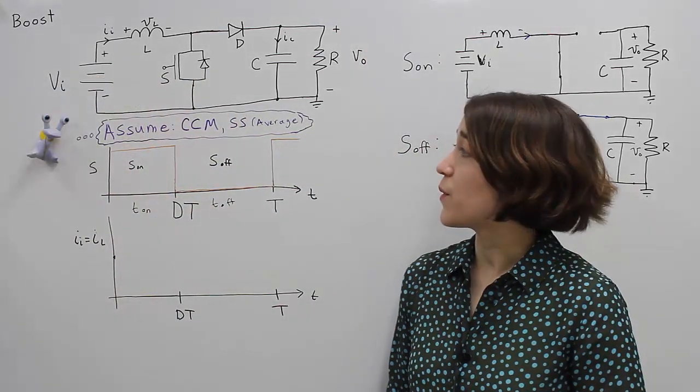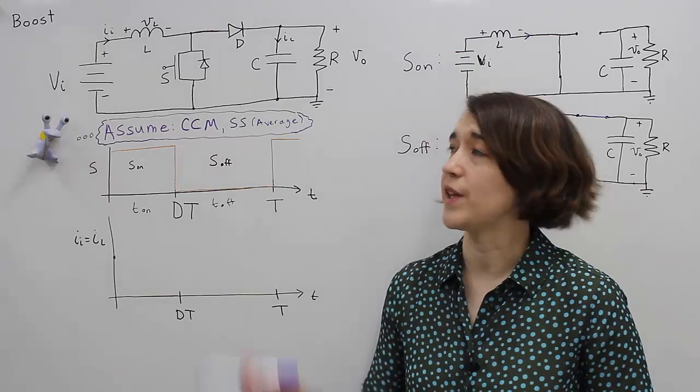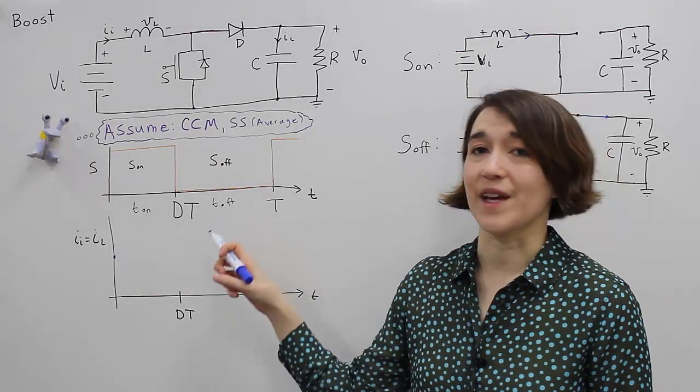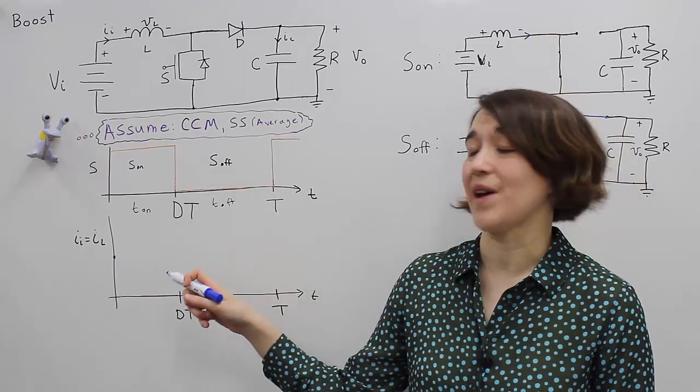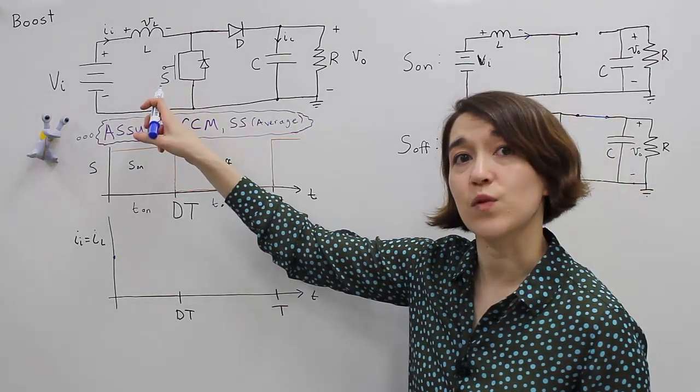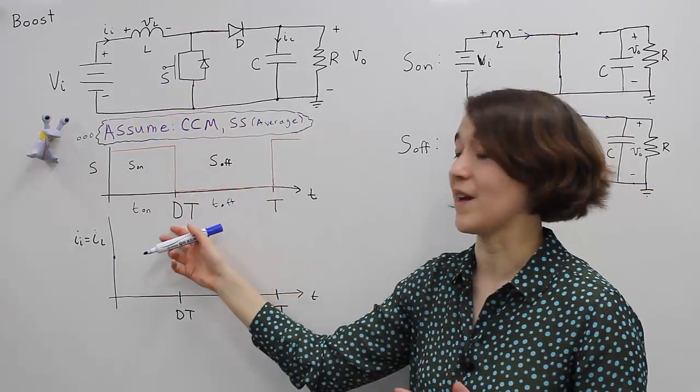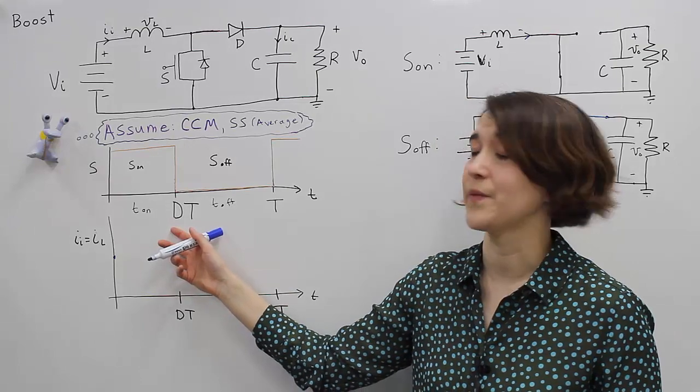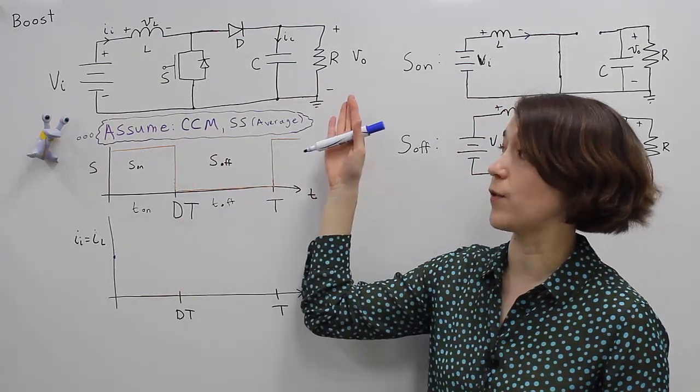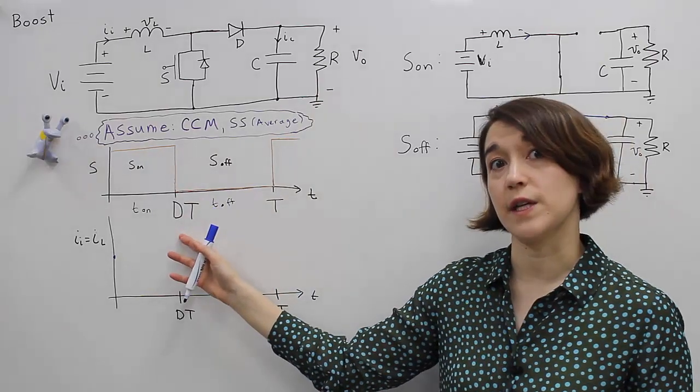So now if we want to derive a relationship between the input and the output, we have to also look at our inductor current. And remember our control variable, the thing that we can control, is the on time of this switch, which we can represent as D, the duty ratio. So we're going to derive a relationship between the input voltage, output voltage, in terms of D.